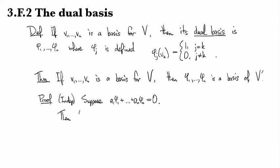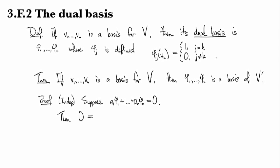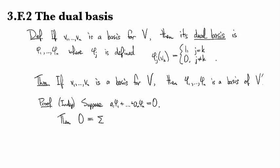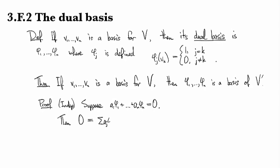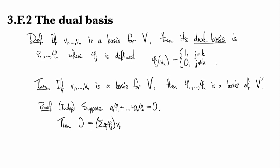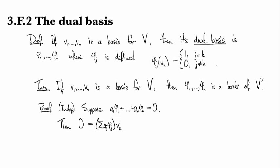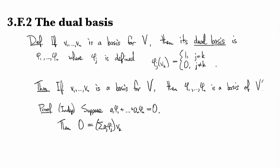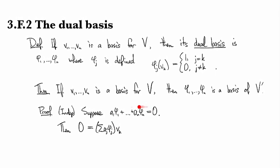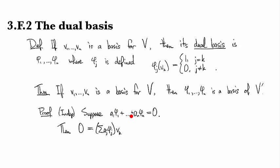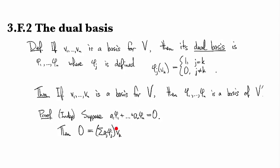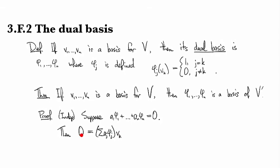Then what do we know? Well, then 0 is—and I'm just going to rewrite that thing up above—as the sum of aj vj applied to vk. Right? So if this equation is true right here, it means that a1 v1 plus an vn is the 0 map, which means that if I apply it to anything, including things in my basis, I get 0.